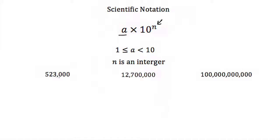So if we had 523,000 I could write that as 5.23 because remember our number has to be between 1 and 10, and then we put a times 10 and then this would be to the 1, 2, 3, 4, 5th power.